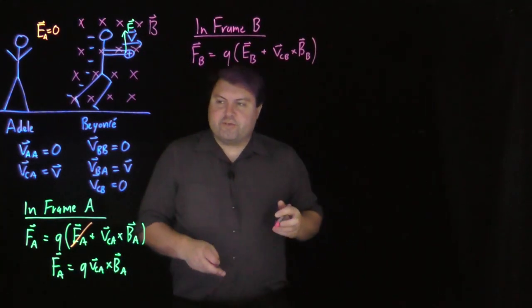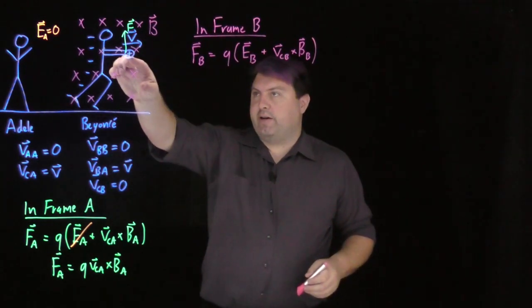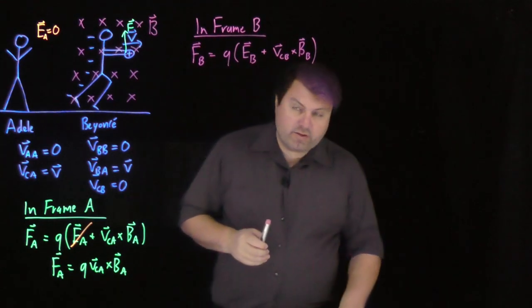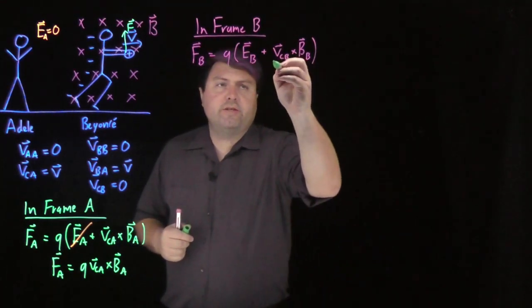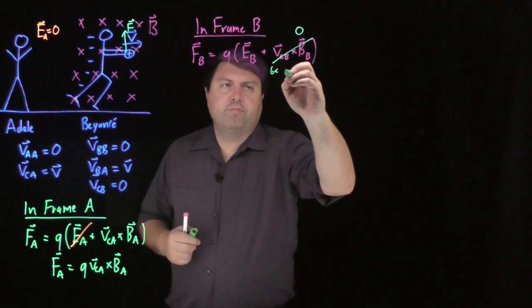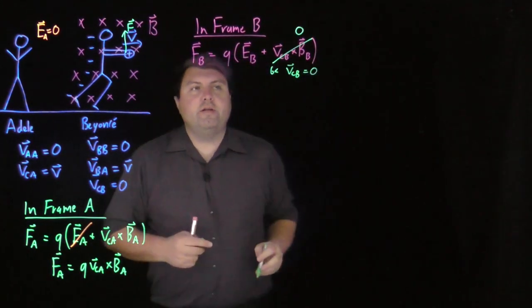This is where things get interesting. This is where things get fun because the velocity of the charge is moving in the same speed as B. So this entire thing must be zero because VcB is equal to zero.